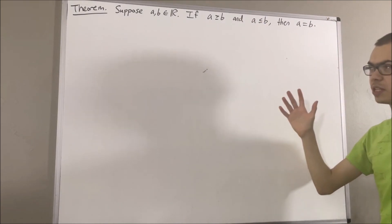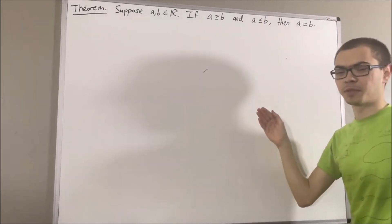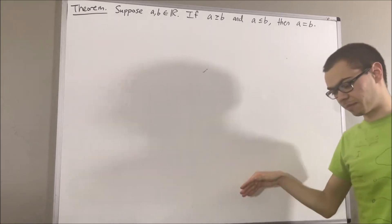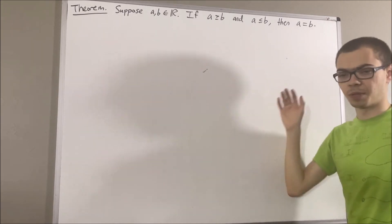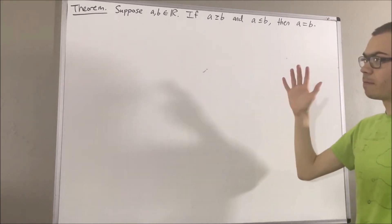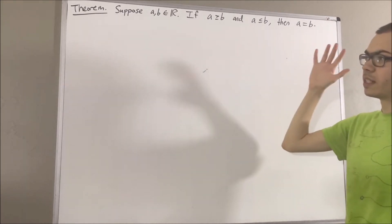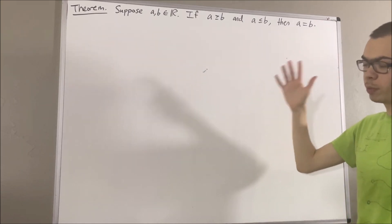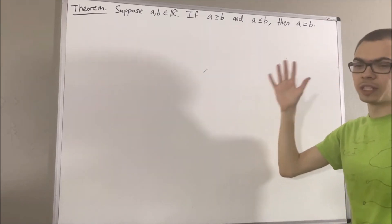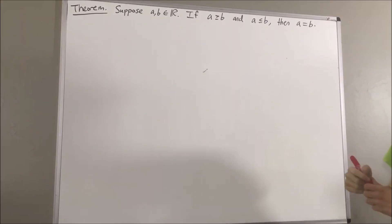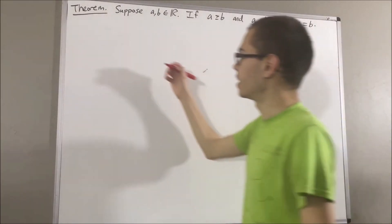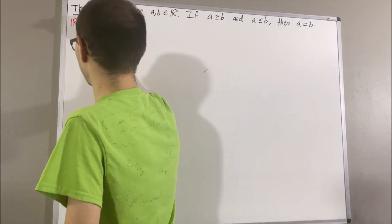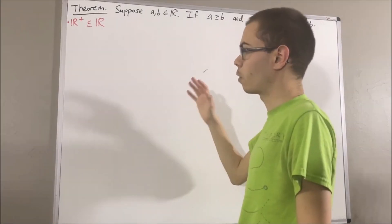Now, in this series, we are using a list of 10 axioms for the real number system, and I'll leave that list of axioms in the description below. In our real number system, the real numbers are equipped with a subset which we call the set of positive real numbers, and it's denoted as R+.